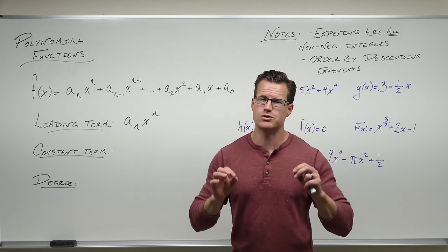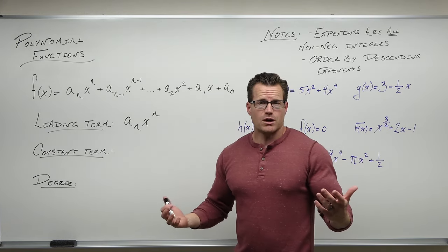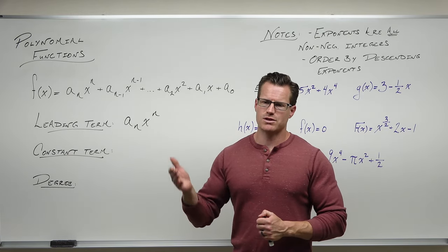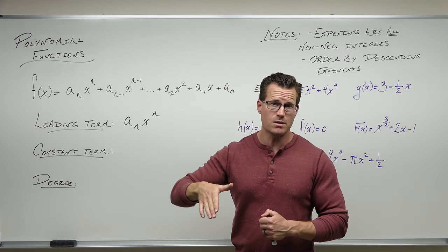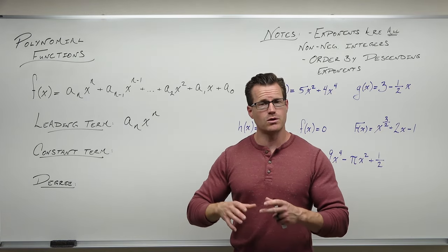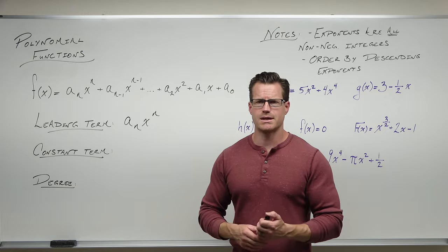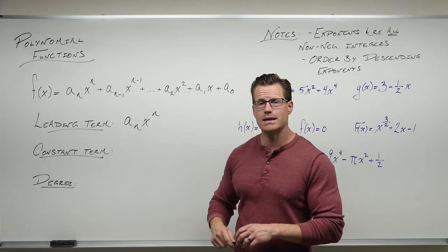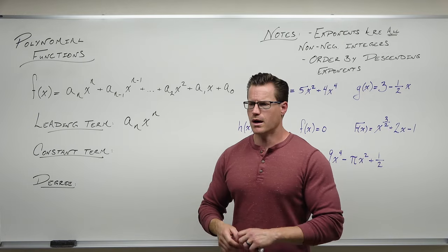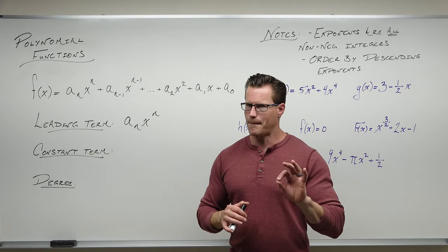We already talked about why the leading term is really important. It's going to give us end behavior, it's going to give us the degree, it's going to give us the maximum number of turning points — that's the degree minus one — and the number of zeros if you include complex numbers. Together with the leading coefficient — the number in front of our leading term not including the x — it's going to give us the rational zeros theorem.